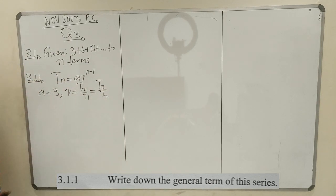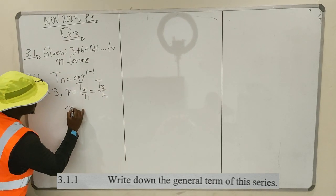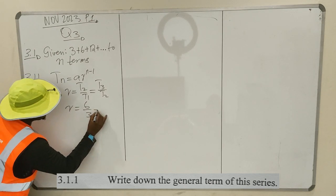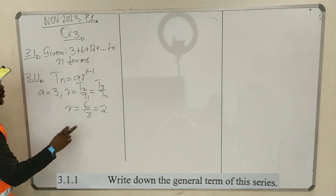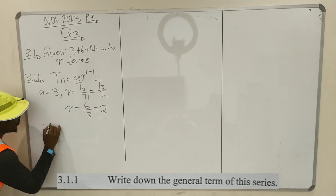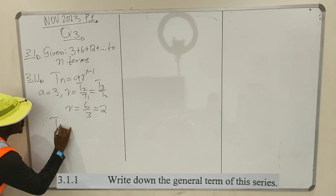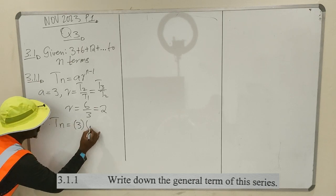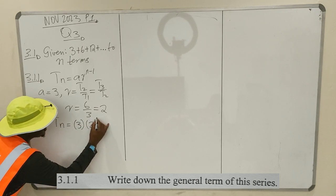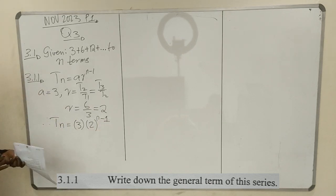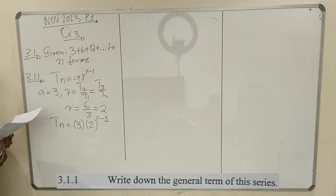So your R is equal to 6 over 3, which is equal to 2. So your R is 2. You have your A and you have your R. Therefore, your Tm is equal to 3 times 2 raised to the power n minus 1. So this is your general term for your series.